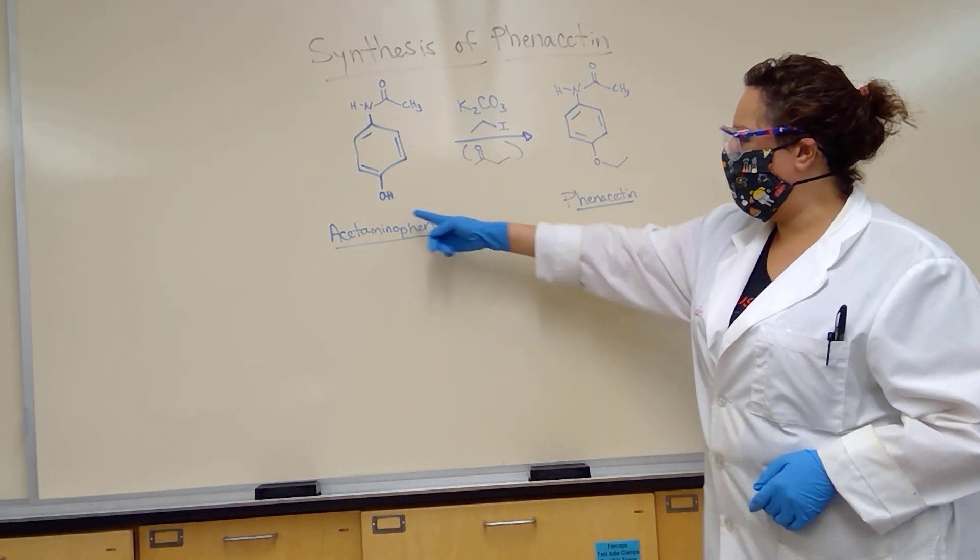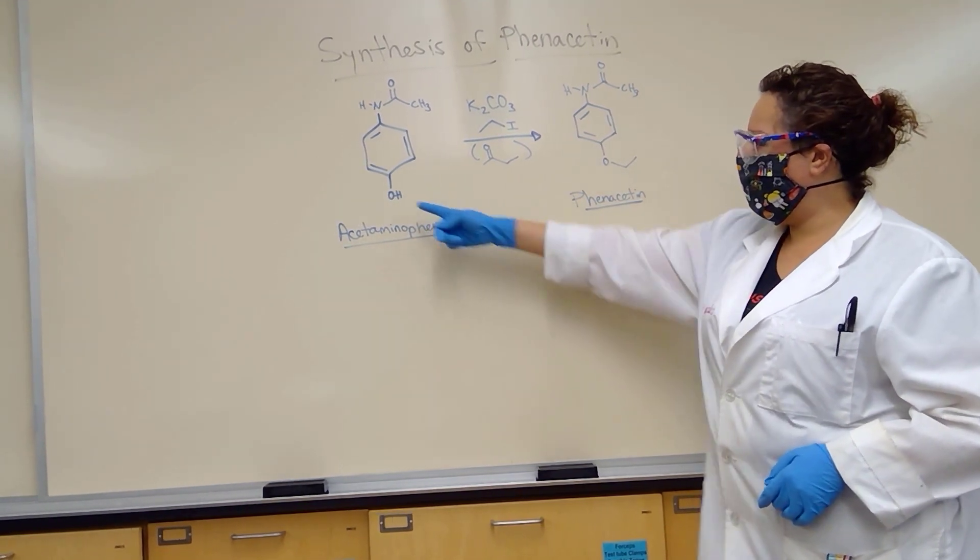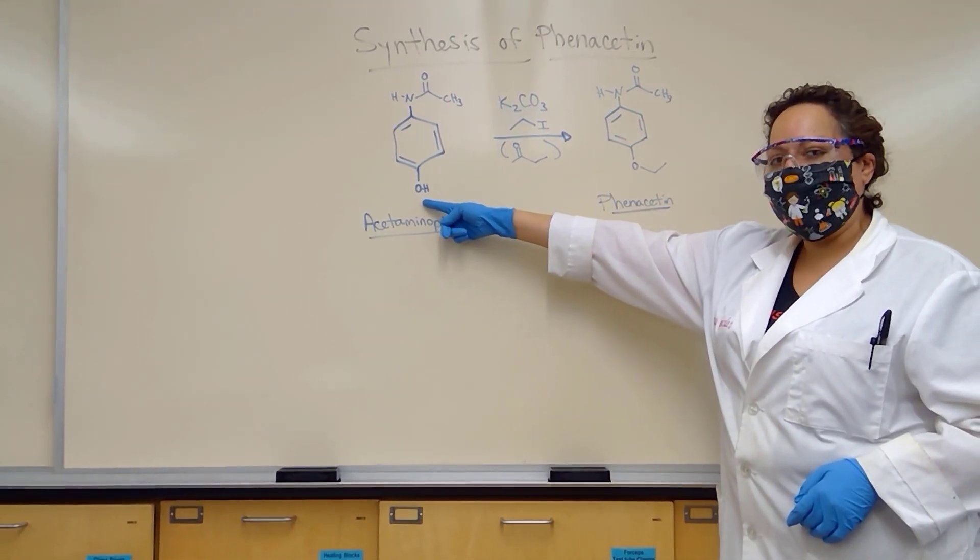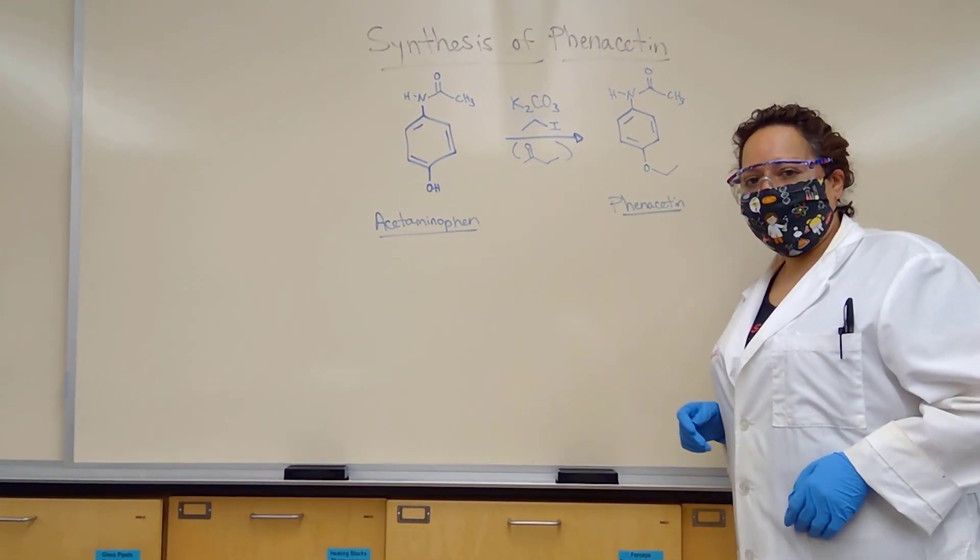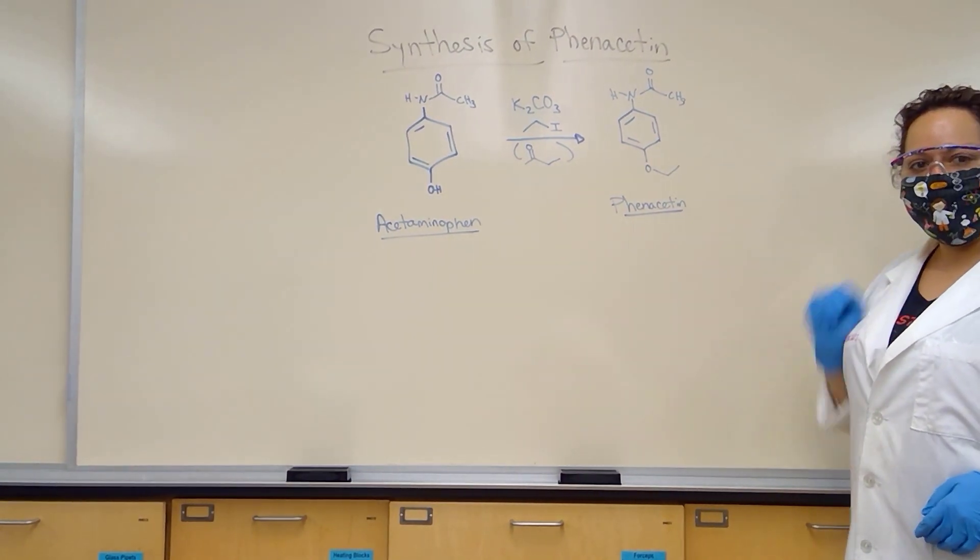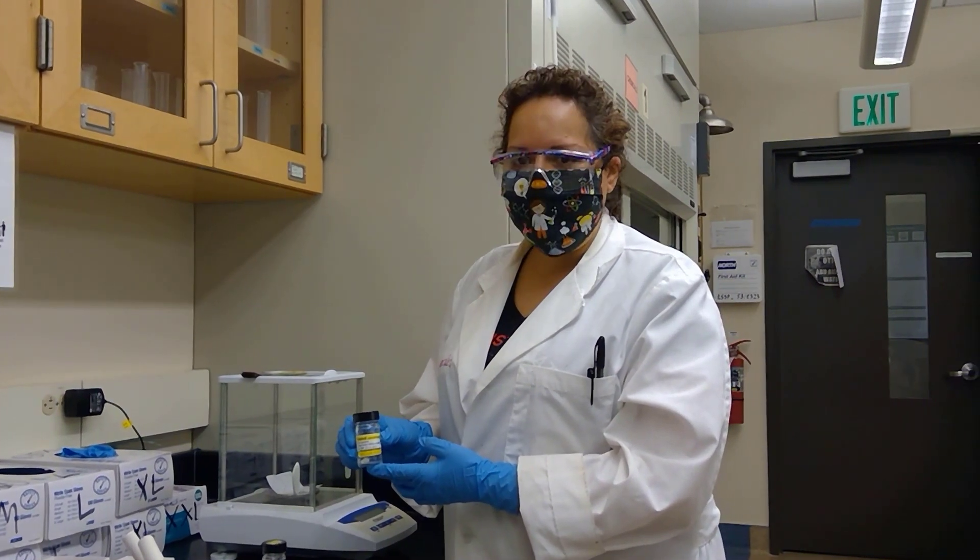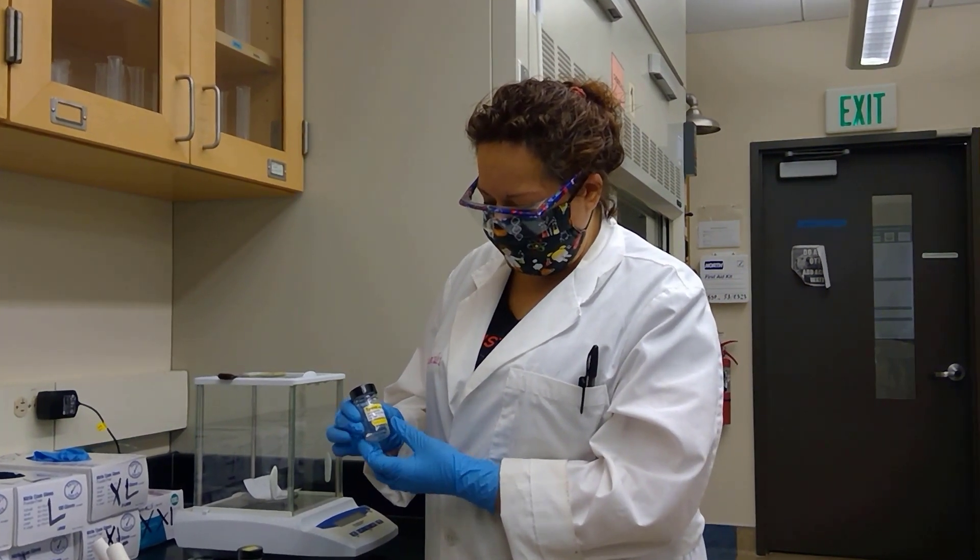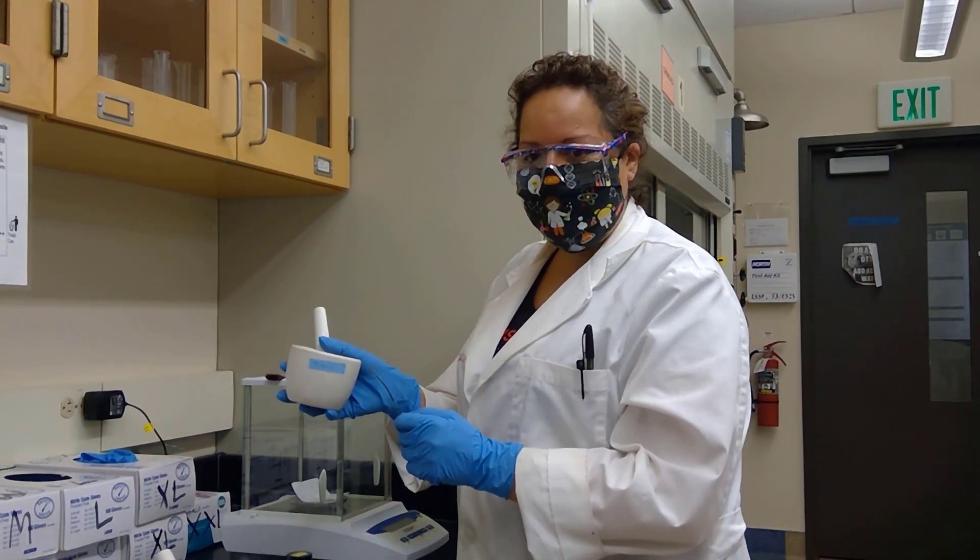The goal is to deprotonate our acetaminophen's alcohol and allow the oxide to do an SN2 reaction on ethyl iodide. Once that is accomplished, we will generate the compound known as phenacetin. We are starting this experiment by crushing up some extra strength Tylenol, and I will measure 0.22 grams of the crushed Tylenol.